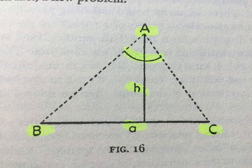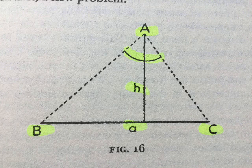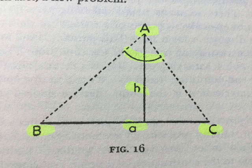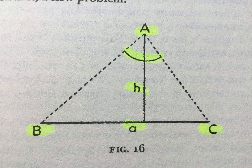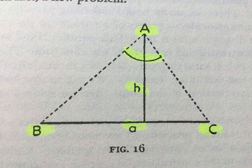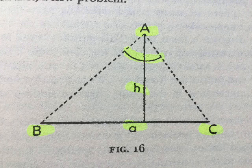6. Changing both the unknown and the data. We deviate more from our original course than in the foregoing cases, and naturally we do not like this. We sense the danger of losing the original problem altogether. Yet we may be compelled to such an extensive change if less radical changes have failed to produce something accessible and useful. And we may be tempted to recede so far from our original problem if the new problem has a good chance of success. Could you change the unknown or the data — or both if necessary — so that the new unknown and the new data are nearer to each other? An interesting way of changing both the unknown and the data is interchanging the unknown with one of the data.